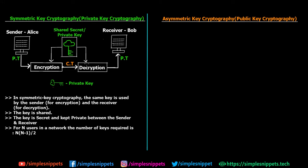Starting off with symmetric key cryptography, also known as private key cryptography. We have our sender Alice and receiver Bob. Alice wants to send a text message to Bob over the network. In symmetric key, they agree on a single shared private secret key — shared only between Alice and Bob, so no third party knows it. Alice takes the plain text, uses this secret key to perform encryption, converts it to ciphertext, and sends it over the internet. Bob uses the same shared secret key to perform decryption and get the plain text back.